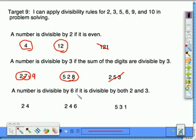A number is divisible by 6 if it is divisible by both 2 and 3. So when we're looking for divisibility by 6, we go back to our rules for 2 and 3, and if it works for both of them, it's also divisible by 6. If it doesn't work for one of these two, then it's not divisible.